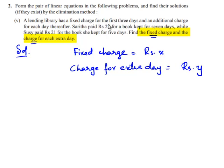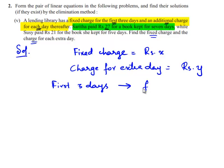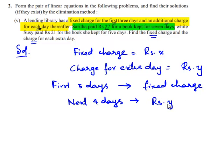According to the given problem, the fixed charge is for the first 3 days and an additional charge is for each day thereafter. Saritha paid 27 rupees for the book kept for 7 days. So, for the first 3 days there will be the fixed charge x, and for the next 4 days the extra charge is y rupees per day. So this equation becomes x plus 4y is equal to 27. This is equation number 1.